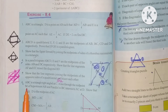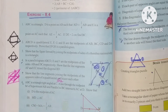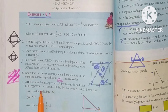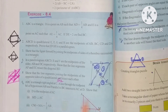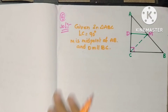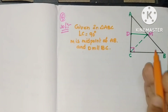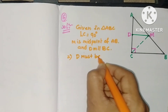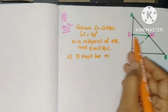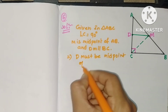The last problem of this chapter: ABC is a triangle right-angled at C. A line through the midpoint M of hypotenuse AB, parallel to BC, intersects AC at D. We have to prove three things. Given: angle C is 90°, M is the midpoint of AB, and DM is parallel to BC. By the converse of the midpoint theorem, D must be the midpoint of AC.